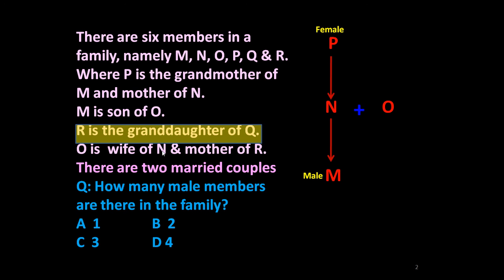O is wife of N, which means O is a female member and N is a male member. Additionally, O is mother of R. So this statement is now taken care of. The next point is there are two married couples, but the second couple is still not clear.